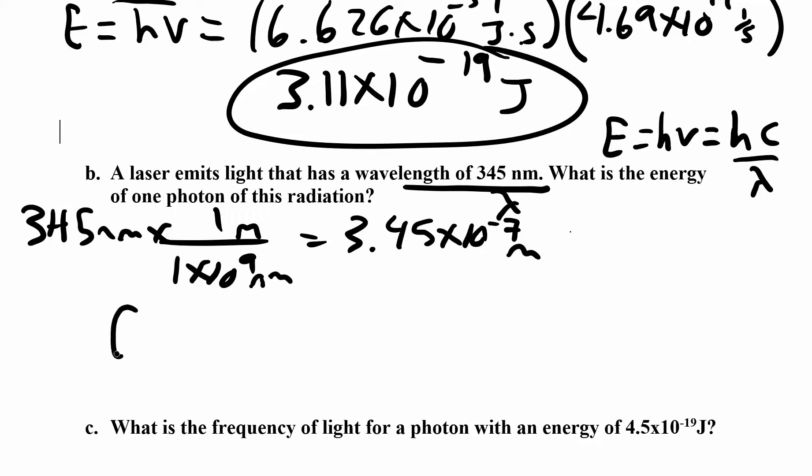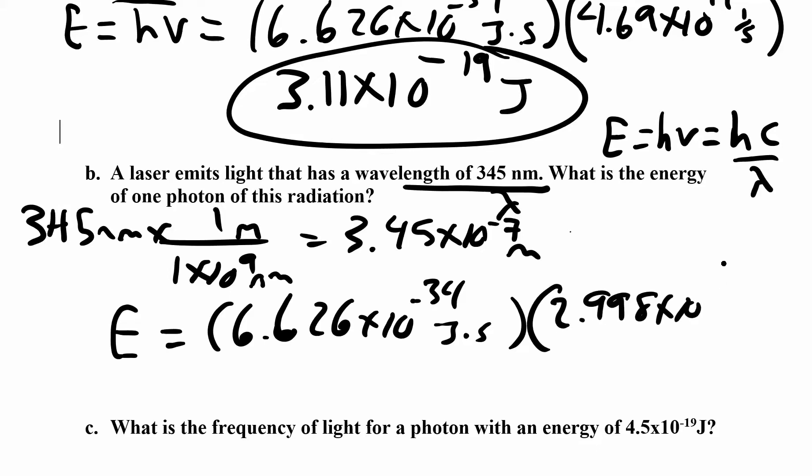So now I can say energy is hc over lambda. h is, again, Planck's constant, 6.626 times 10 to the negative 34. And I'll give you that constant. You don't have to memorize it. I'll also give you the speed of light, 2.998 times 10 to the 8 meters per second. And then divide that by lambda, which is 3.45 times 10 to the negative 7 meters.